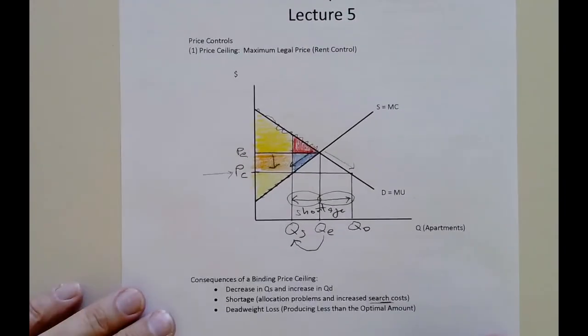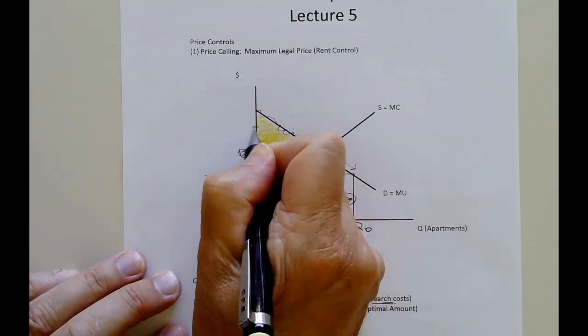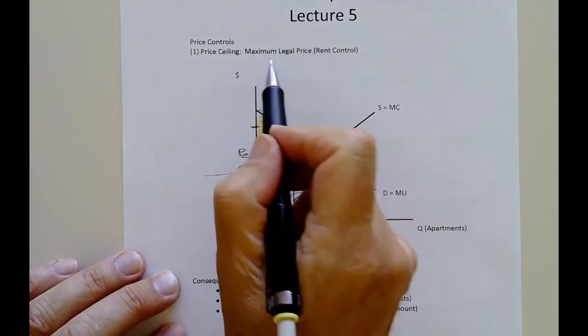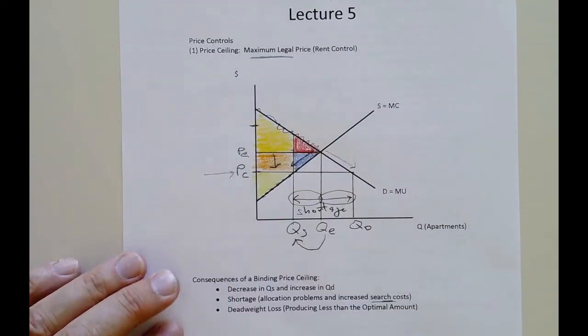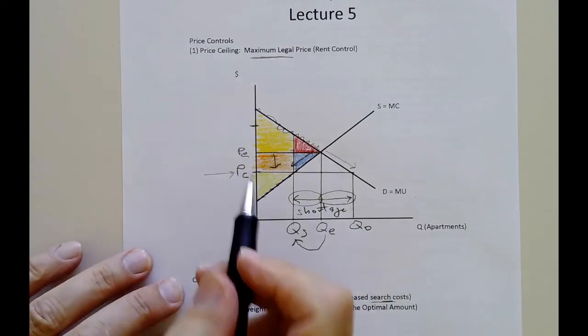Likewise, over here, back to our price ceiling. If I ask you on the exam, if you put a ceiling up here, what impact would it have on the market? The answer is nothing again. That would be non-binding. Why? Because this is a maximum legal price. The definition of this is that you can't go above it. Well, the market doesn't want to go above it. Again, equilibrium is here.